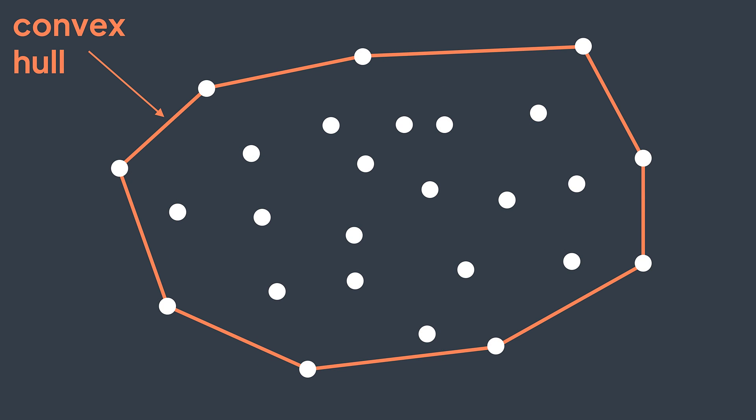Quick reminder, the convex hull of a set of points is the smallest convex polygon that contains all the points inside it. Convex polygon means that all interior angles are less than or equal to 180 degrees.